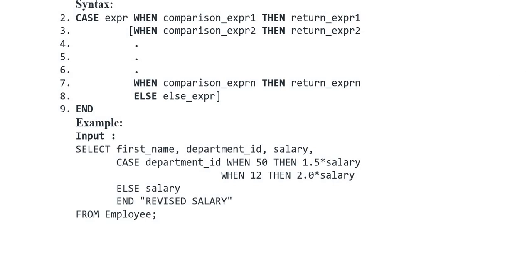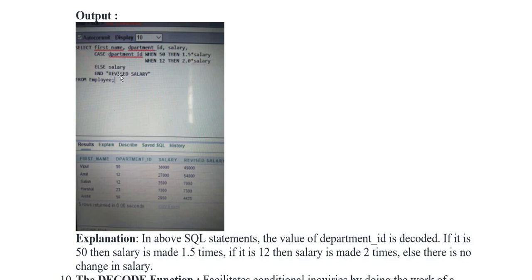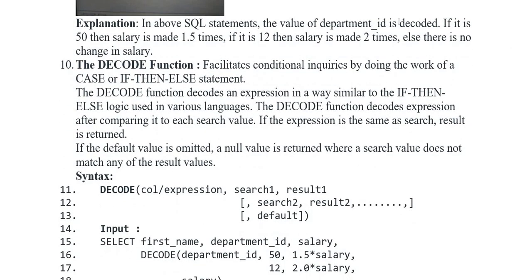CASE department_id WHEN 50 THEN 1.5 * salary, WHEN 12 THEN 2.5 * salary, WHEN 20 THEN 2.0 * salary, ELSE salary put kya gaya as revised_salary FROM employees. Yaha pe result mein first_name, department_id, salary, aur revised salary represent kya gaya. If department_id is 50 then salary is made 1.5 times; if 12 then salary is made 2 times; else there is no change in salary.